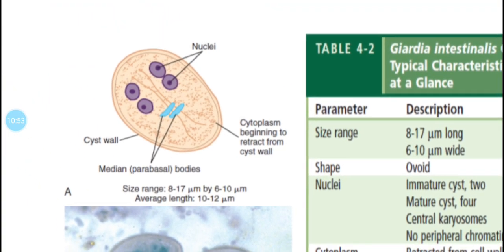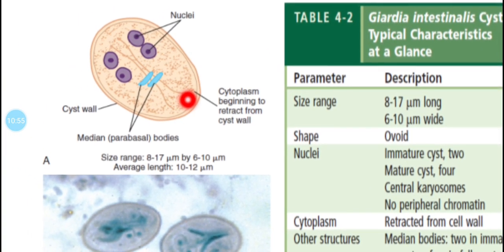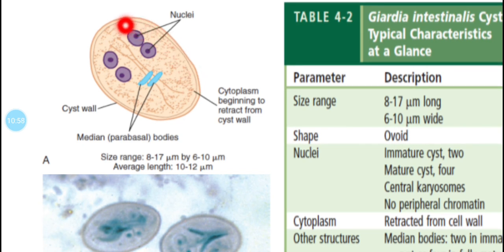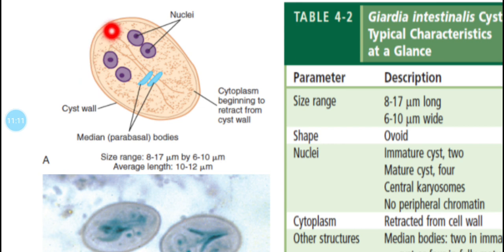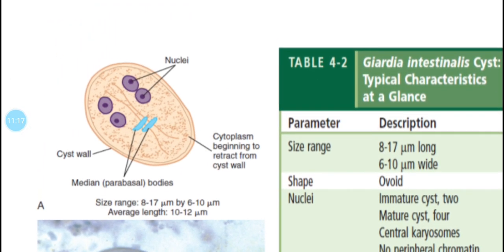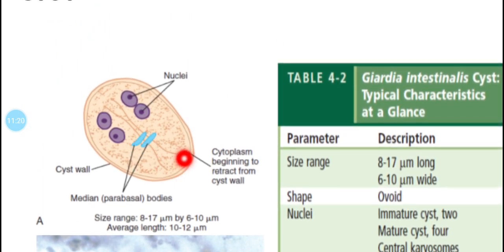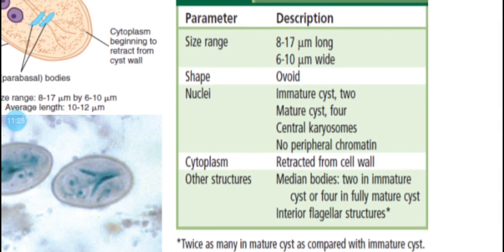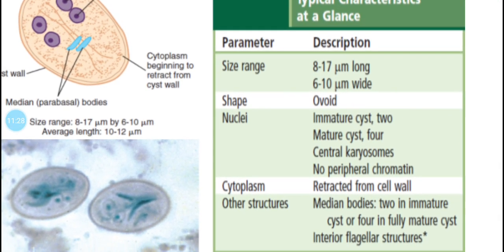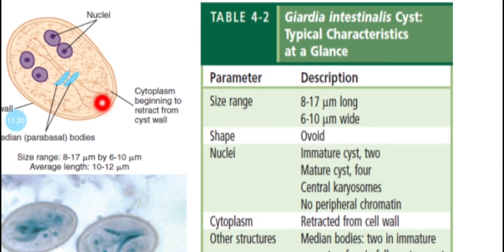The cytoplasm is retracted from the cell wall, creating a clear zone between the cyst wall and the cytoplasm. Other structures visible include the median body. You can also see the axoneme and axostyle structures inside the cyst.